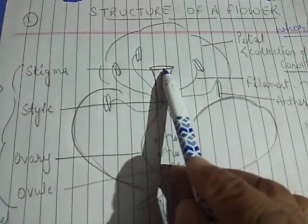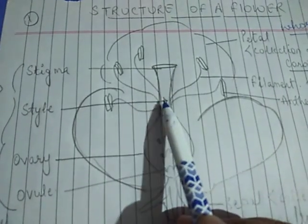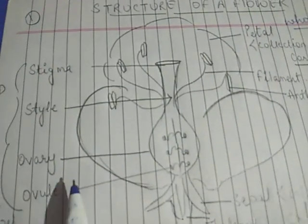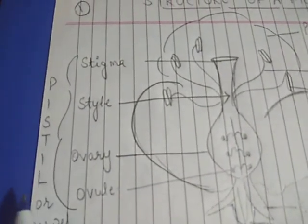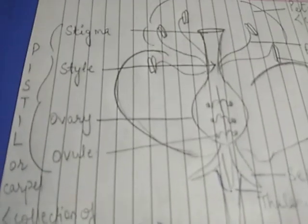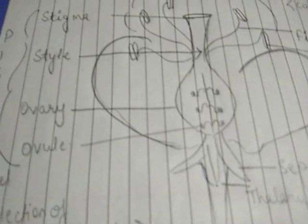Now let us talk about the female part of a flower. The topmost part is stigma, below it is style, and then ovary. Stigma, style, and ovary together make a pistil, which you also call carpel. The collection of many carpels together is called gynoecium. Carpel consists of stigma, style, and ovary along with ovules present inside the ovary.